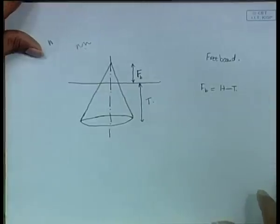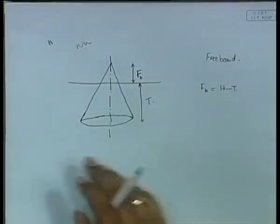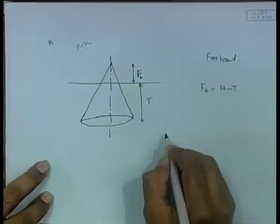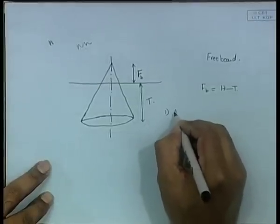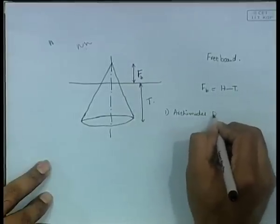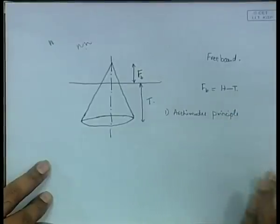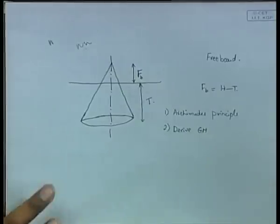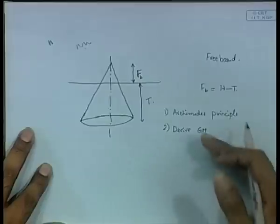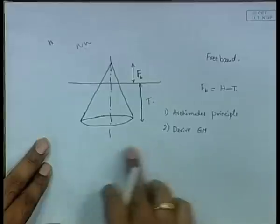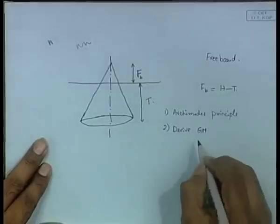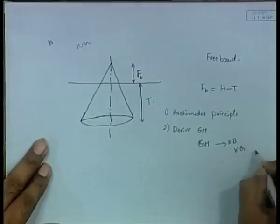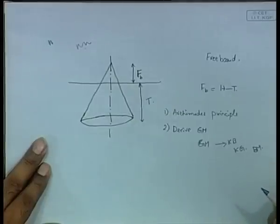The problem is similar, and there are two steps. The first step is always the application of Archimedes principle and the second step is to derive GM. You need all these parameters to get GM: KB, KG, and BM, because GM has no direct formula. There are formulas and methods to find KB where B is the center of buoyancy, KG where G is the center of gravity, and BM known as the metacentric radius, which is I by del.